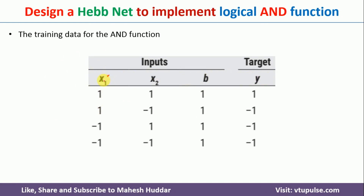X1 can take two possibilities: plus 1 or minus 1. Similarly, X2 can take plus 1 or minus 1. The target is high whenever both inputs are high; otherwise the target is low, or minus 1 in this case. The bias is set to 1 in all cases.